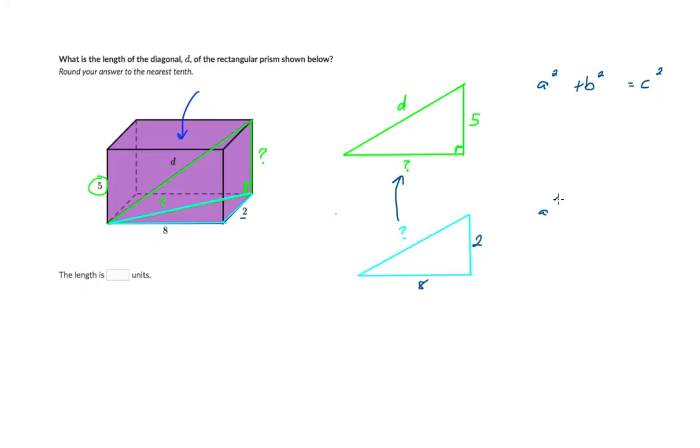Now we can still use Pythagorean theorem to figure out question mark in this case. So I'm going to pick either of the two legs for a and b so I'll put eight squared here, two squared here, and we'll put question mark in as the longest side length. So eight squared is 64 plus 4 is equal to question mark squared. So 68 is equal to question mark squared.